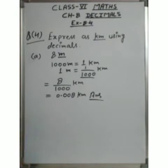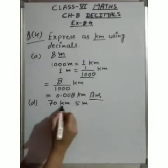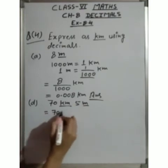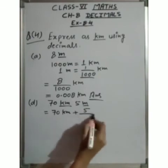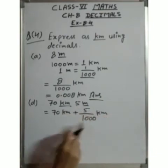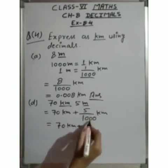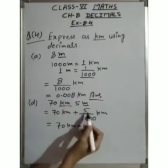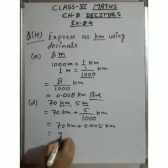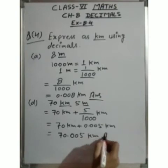B and C parts are the same. D part is 70 kilometers 5 meters. 70 kilometers is already in kilometers, so we write it as it is. To convert 5 meters to kilometers, we divide by 1000: 5 upon 1000 = 0.005 kilometers. Adding 70 + 0.005 = 70.005 kilometers. This is the answer.